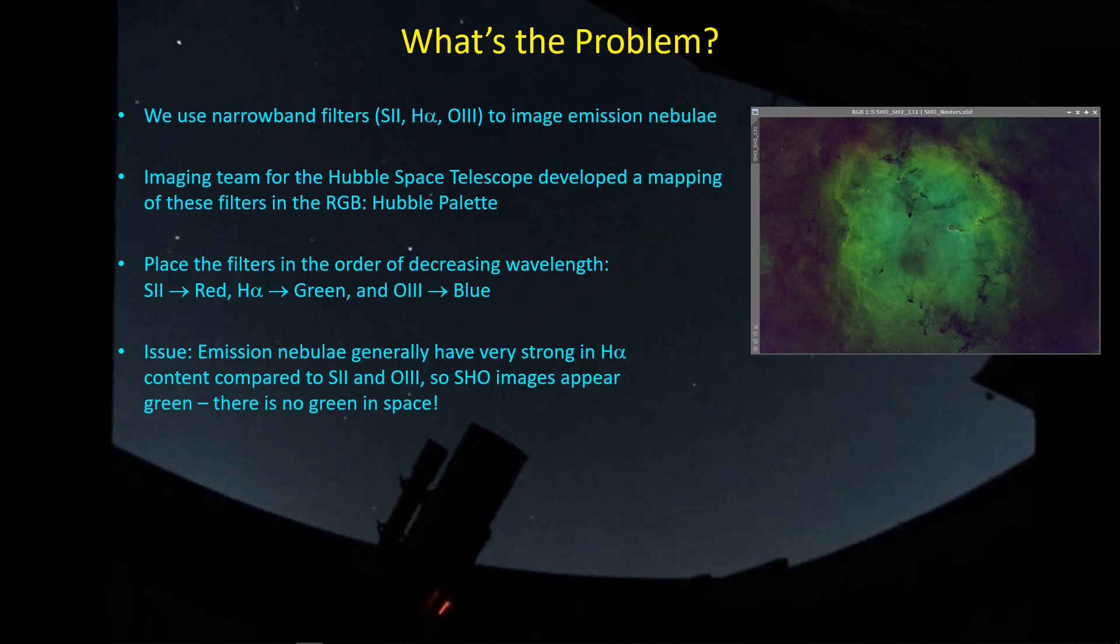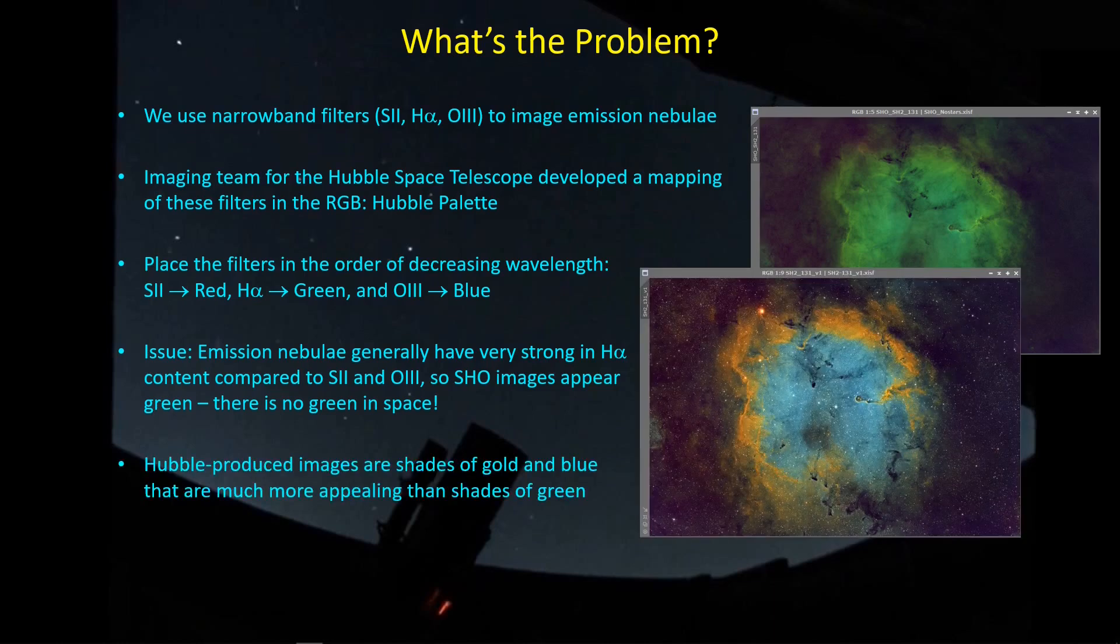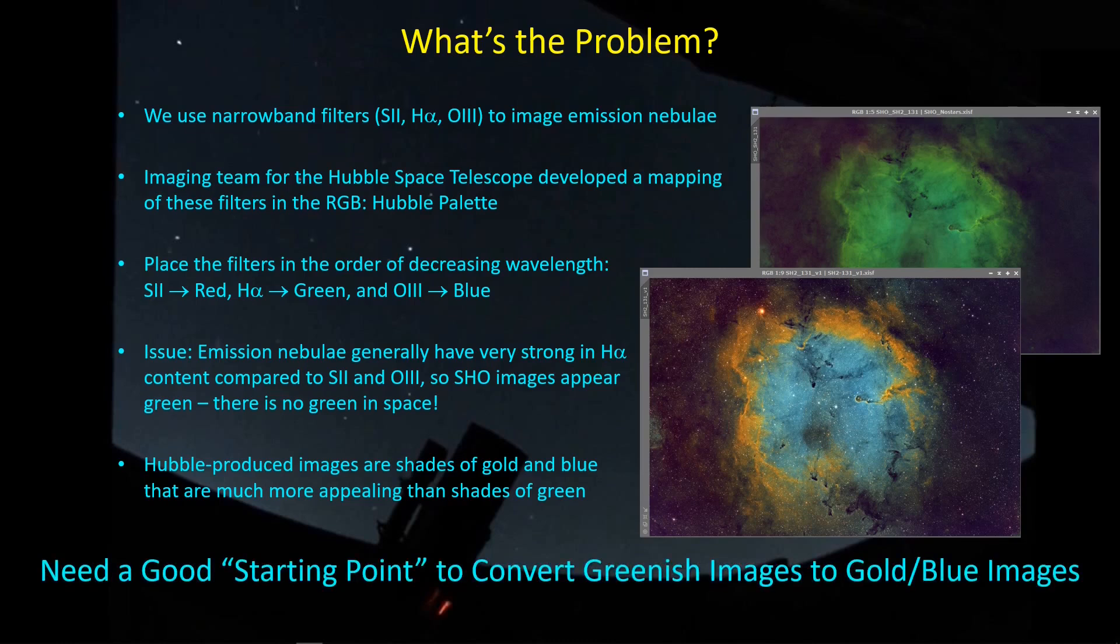This is great, except for the problem that emission nebulae are generally very strong in H-alpha, which leaves us with an image that looks very unappealing and green, where there is basically no green in space. This is what we're starting off with when we form the basic Hubble palette. But the Hubble produced images are much more appealing shades of blue and gold rather than mostly green. We need a good starting point to convert the greenish images into the blue and gold images that we like to look at.